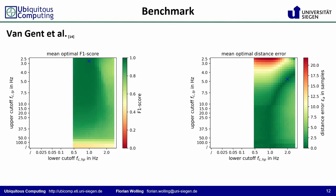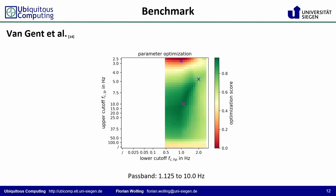Because less filtered and hence more noisy signals significantly increase the number of peak candidates, von Gendt's algorithm requires a lower cutoff of at least 0.5 Hz. The F1 score on the left and the distance error on the right show a rather complex structure. Again, the multiplication of the two normed metrics allows finding a trade-off, marked with the pink cross.